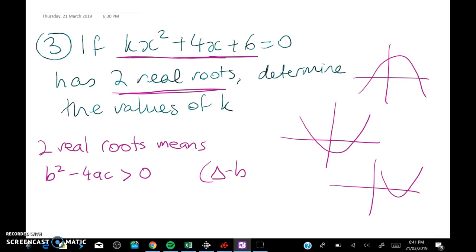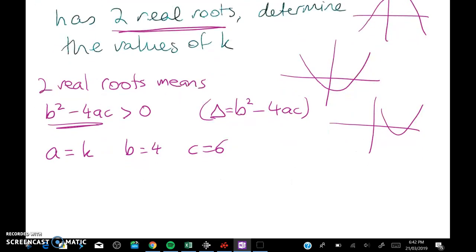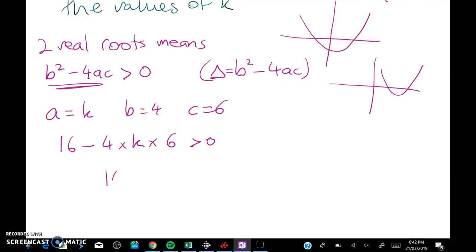So two real roots means that b squared minus 4ac is strictly greater than 0. Sometimes we write that discriminant as a little triangle delta. Now we have to say that we're doing that otherwise the person who's reading it has no clue why we're talking about this thing here. So let's go through systematically and say what's a, what's b and what's c. Well a is equal to k, b is equal to 4 and c is equal to 6. Substituting those into the discriminant formula gives me 16 minus 4 times k times 6 which is strictly positive.